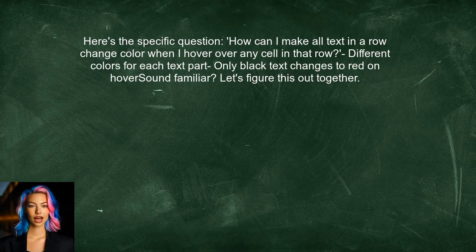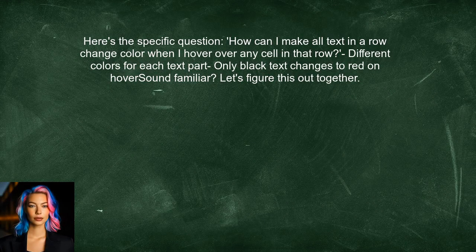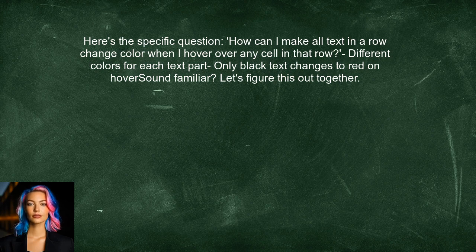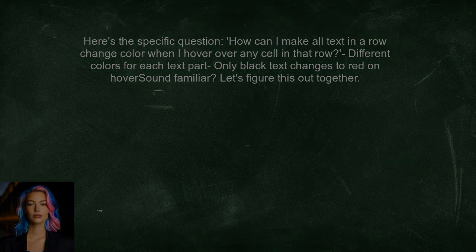Let's dive into the specific question at hand. One user asked: how can I make all text in a row change color when I hover over any cell in that row? They shared their code, which shows different colors for each text part, but only the black text changes to red on hover. Let's figure this out together.